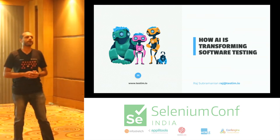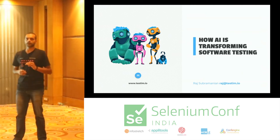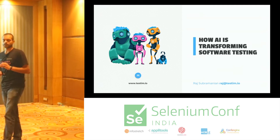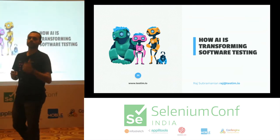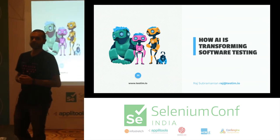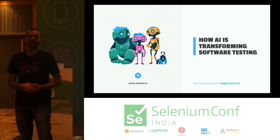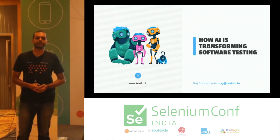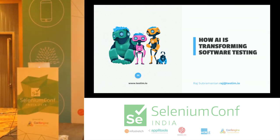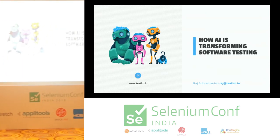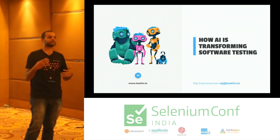My name is Raj Subramanian. I work for a company called Testim.io — T-E-S-T-I-M.io. We have an AI-based software testing tool which helps with front-end testing, UI testing, and end-to-end testing. I'm a developer evangelist, which means I write and speak about software testing, work with the founder to make our tool better, and work directly with customers to help them use our tool.